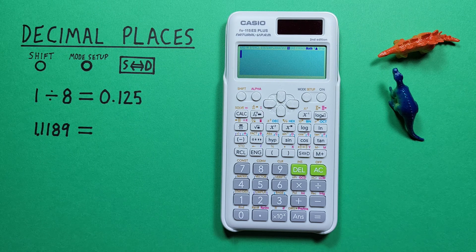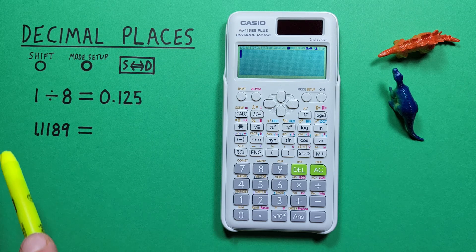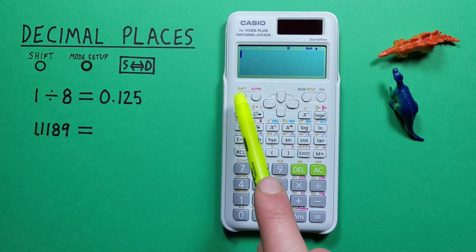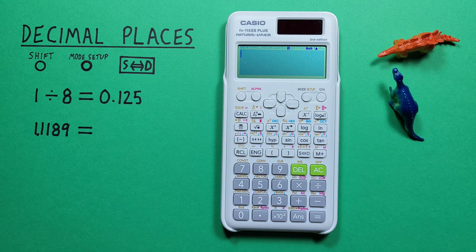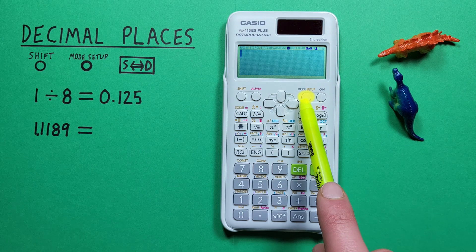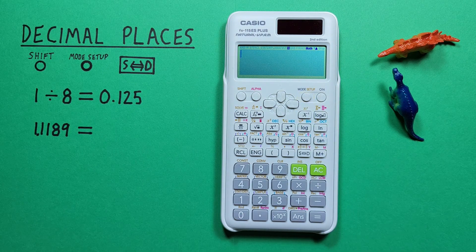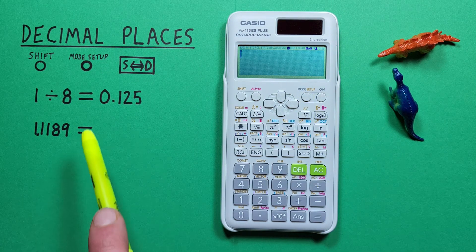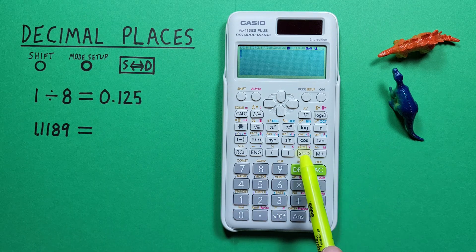To do that we'll use the shift key that looks like this located here, the mode setup key that looks like this located here, and the STD or conversion key that looks like this located here.